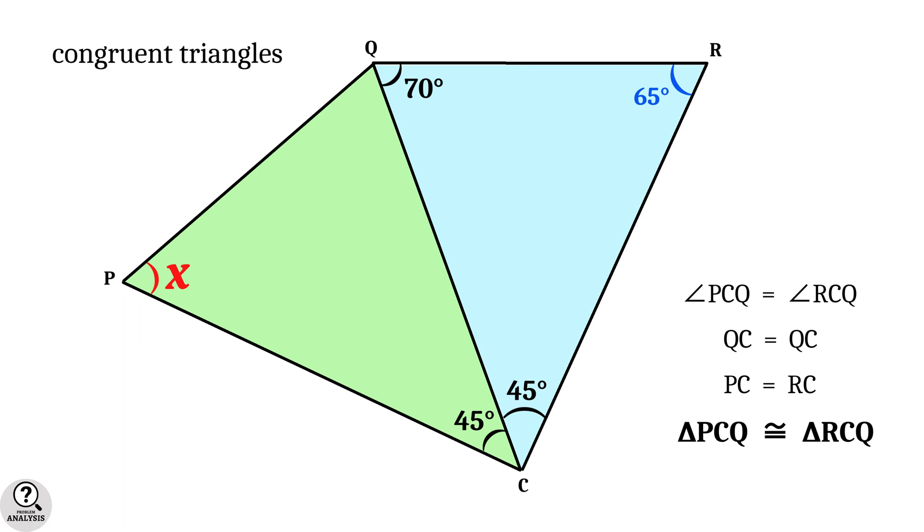That means the remaining pair of sides are equal. That is PQ equals RQ. The remaining angles are also pairwise equal. That is, from the figure, angle PQC and angle RQC are equal. And that is equal to 70 degrees.